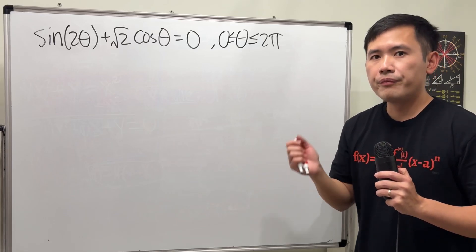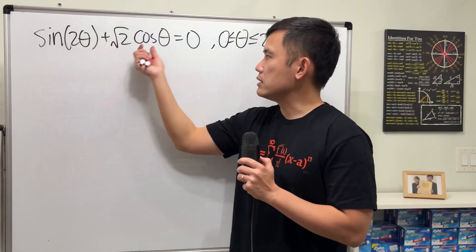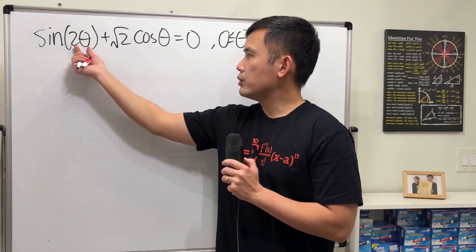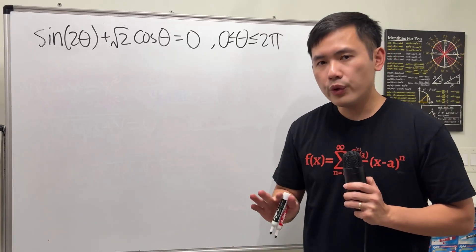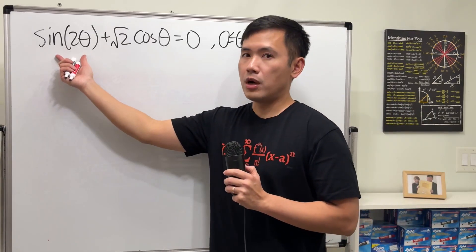So how do we do this? First thing first, we are going to make sure that the angles inside are the same first. This is 2 theta, this is just 1 theta, that's no good. But don't worry because we do have the double angle identity for sine. Let's use that to break it apart.